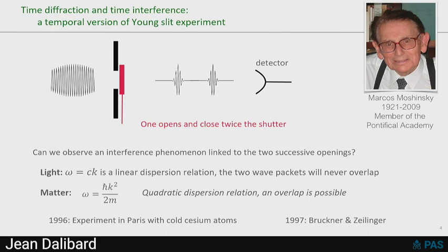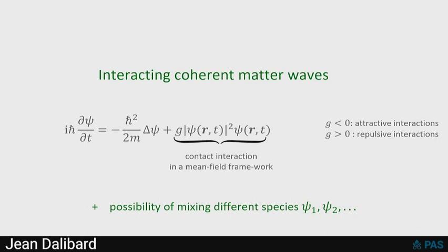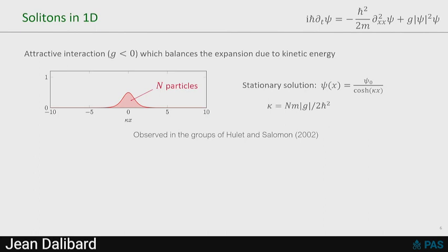Okay, so let me go now to the main core of the talk, which is interacting cold matter waves. So I assume that I'm dealing with a collection of bosonic particles, which are all prepared in the same state, really Bose-Einstein condensate. These particles are described by this collective wave function, psi of R and T. And I describe the interactions between these particles by a nonlinear term proportional to density, so the modulus square of the wave function, with a coefficient g, which can be positive or negative. If g is negative, I will get attractive interaction. If g is positive, I will get repulsive interaction. And one nice feature of matter waves, in contrast to light waves, is that I can mix different species, and as you will see, it will be important in the talk, so I can write coupled Gross-Pitaevsky equations for psi 1, psi 2, and so on.